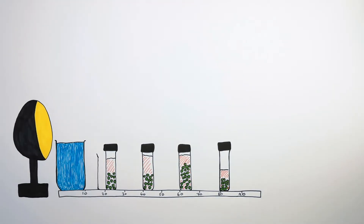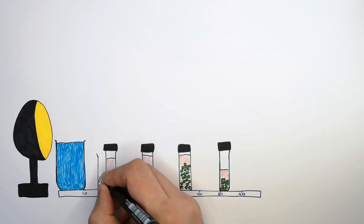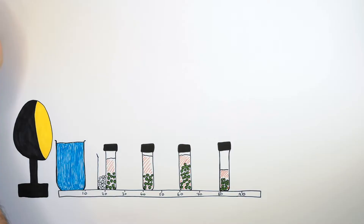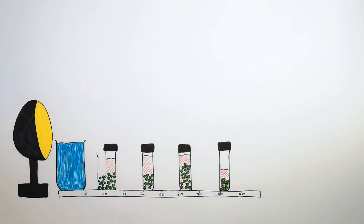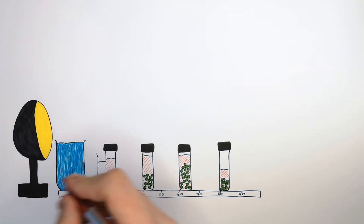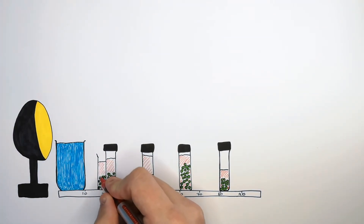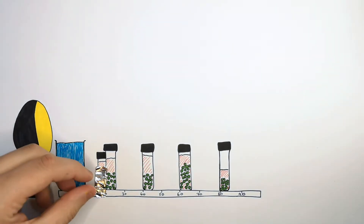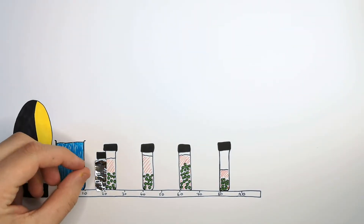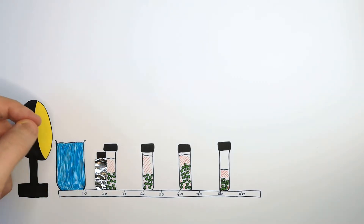We now set up the control. This is not a control variable but it is called a control. We set up the flask as all the others — the same number of algal balls, which in this case is 12, and the same volume of hydrogen carbonate indicator. We are testing the effect of light intensity on the rate of photosynthesis, so in this flask we test what happens if there is no light. We cover the flask with tin foil to prevent light entering it.